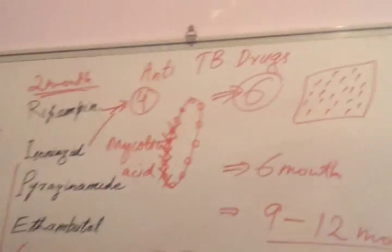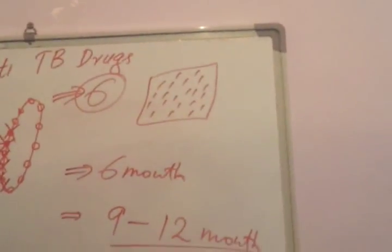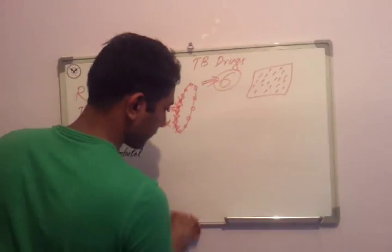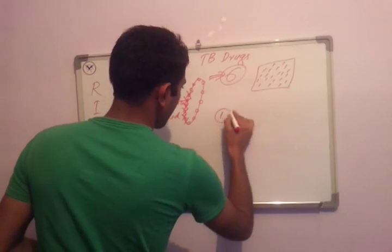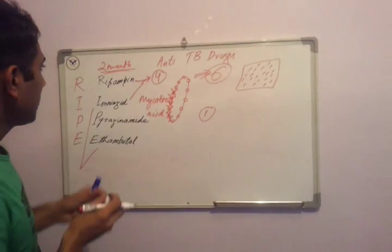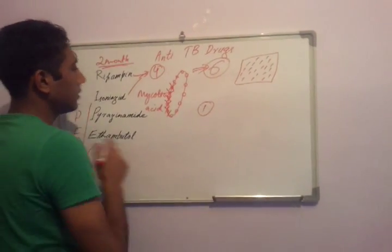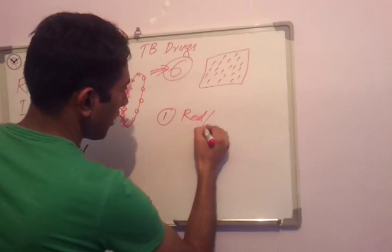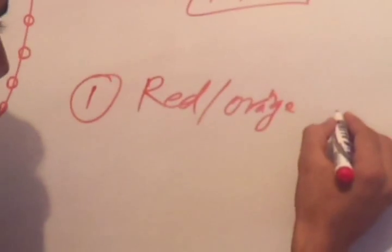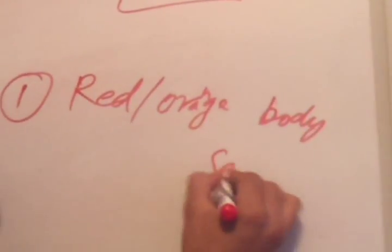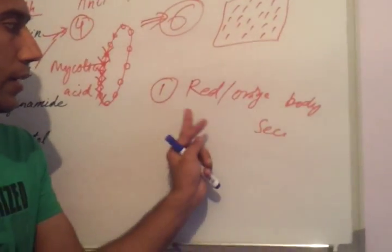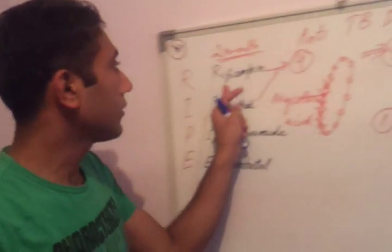Now, side effects of anti-tuberculous drugs. The side effect of rifampin is red or orange colored body secretions — the color of saliva, tears, sweat, and urine become red or orange. This is a notable side effect of rifampin.